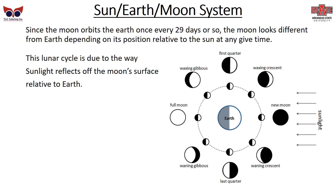Since the Moon orbits the Earth every 29 days or so, the Moon looks different from Earth depending on its position relative to the Sun at any given time. When the Moon is between us and the Sun, the Sun is on the back side of the Moon and we see the dark side — we appear to see the new Moon. When the Moon is on the opposite side of the Earth, it's in the full light of the Sun, so we say it's a full Moon. The illumination of the Moon is sunlight reflecting off the Moon's surface relative to Earth.